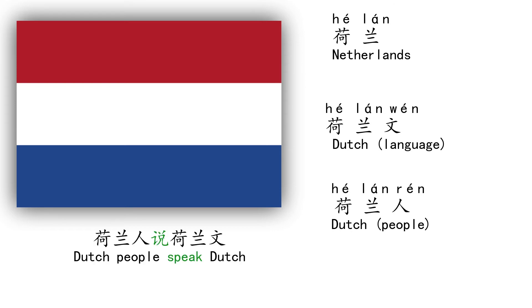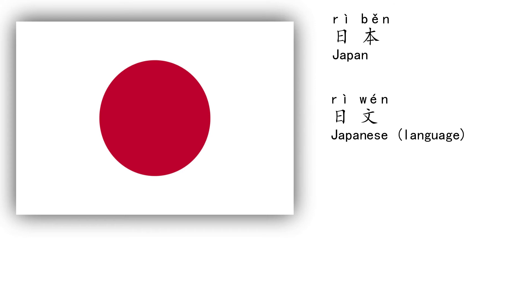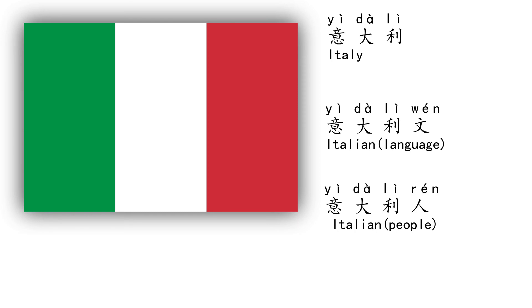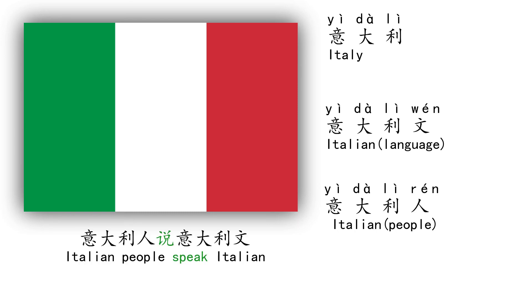日本、日本. 日文、日文. 日本人、日本人. 日本人说日文. 意大利、意大利. 意大利文. 意大利人、意大利人. 意大利人说意大利文.